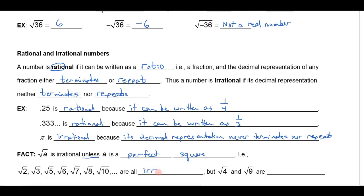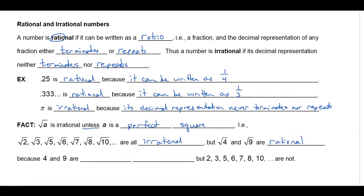So when you put those in your calculator to find that decimal equivalent, you're going to get a long list of decimals that's going to not terminate and they won't repeat. But the square root of 4 and the square root of 9, they are rational. And that's because 4 and 9 are perfect squares. But all these other numbers are not.